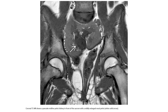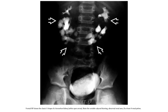T1-weighted imaging shows a pancake midline pelvic kidney in front of the sacrum with mildly enlarged renal parenchyma. The IVP shows a classic U-shape of the horseshoe kidney, with abnormal renal axis and at least four renal calyces.